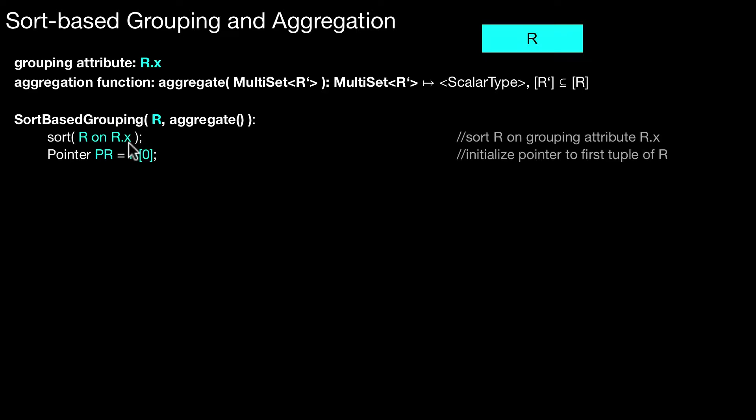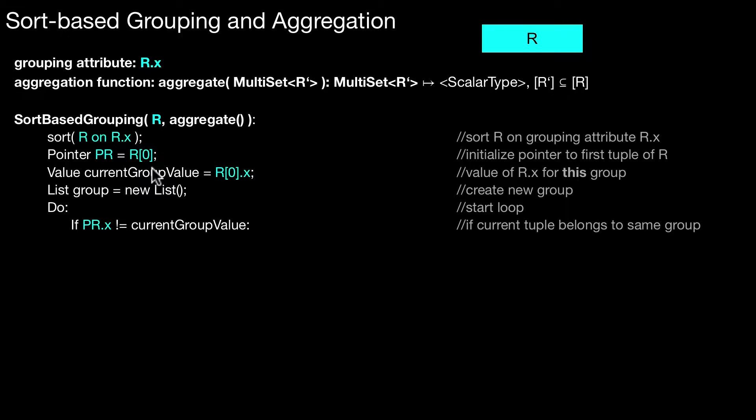And then, what you do is very similar to sort-merge join. You step through the sorted entries one by one. You initialize the pointer to the first entry. You also initialize a variable that points to the current group value of x, and you initialize the list of values that have this specific value. Then we loop. We basically check whether this group value changed. Recall, now the input is sorted. We see something like this: we have group values, this is column R.x. Say, we have group values 2, 2, 4, 4, 7, 7, 7, 9 and so forth. Basically, we have to detect those boundaries where R.x actually changes. And that is what this condition checks. Once we are in this situation where the group value changed, we have to close the previous group. Once we found this entry, we can aggregate all values that exist in this list.